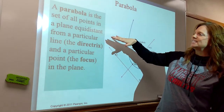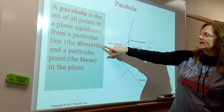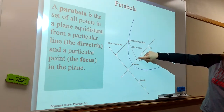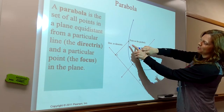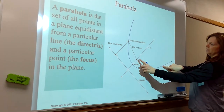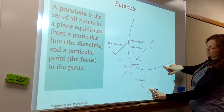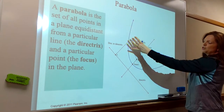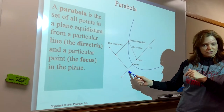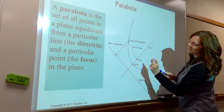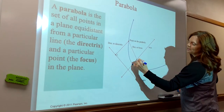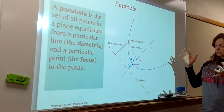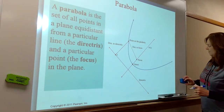A parabola is defined as the set of points that are equidistant from a particular line called the directrix and a particular point called the focus. The curve is generated by requiring these distances to be equal. The distance from the focus to a point on the curve equals the distance from that point to the directrix. That generates this curve. The vertex is right in between the focus and directrix, so if that distance were three, the other would also be three.